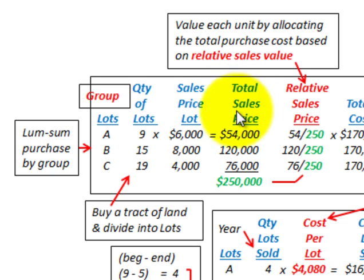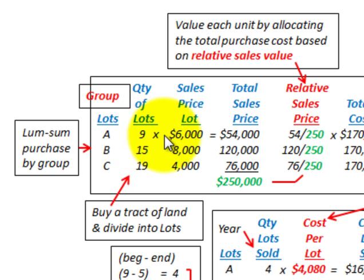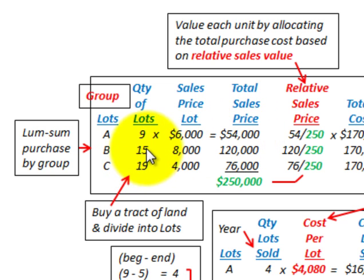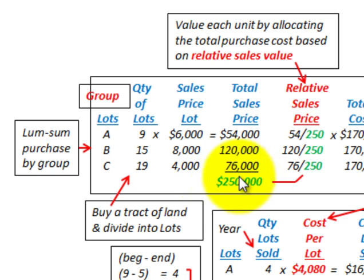First, we determine the total sales price. We take the quantity allocated for each group times the sales price for that group. For group A, we have 9 lots at $6,000 each, giving a total sales price of $54,000. We do the same for lots B and C, then sum them up to get a total of $250,000 for all lots available for sale.